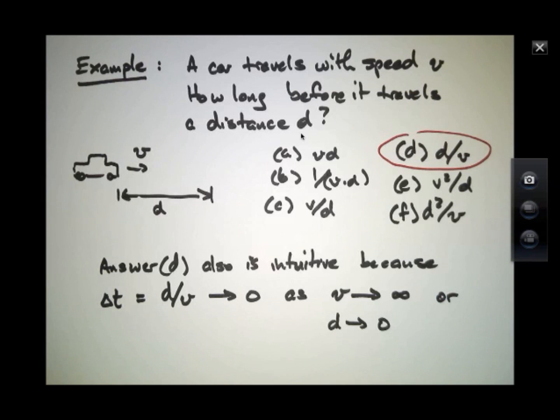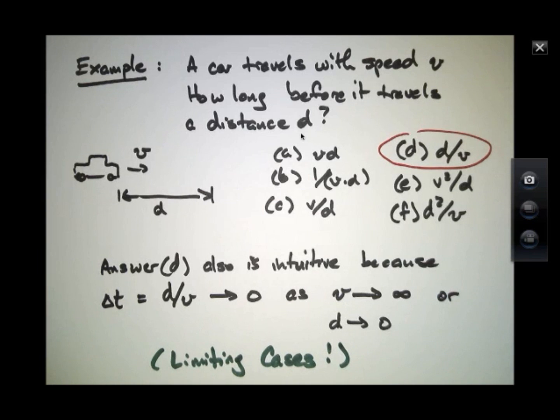So this is another technique besides dimensional analysis that scientists use very frequently. And that is to look at limiting cases, the sense of what are the extreme variations of this answer as I take one or other variable and either have it go to 0 or have it go to a very large case.